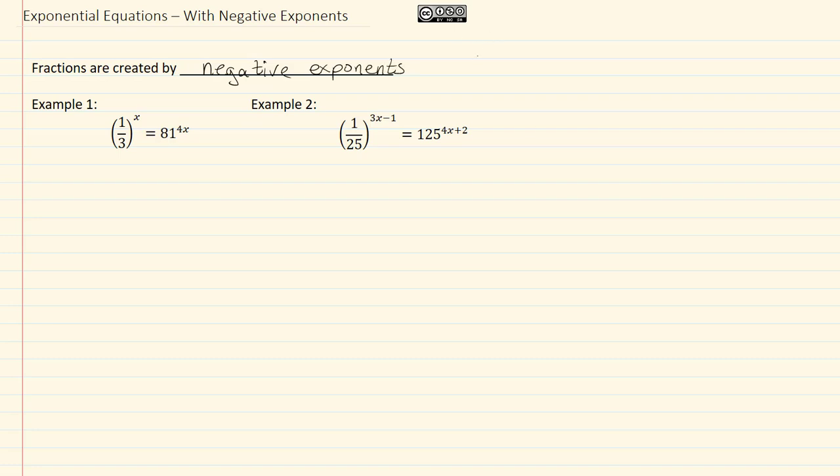In other words, when you have something like this, three raised to the negative one power is the same as saying we have one-third. Or if you had one over twenty-five, this is the same as saying that you have twenty-five to the negative one power.